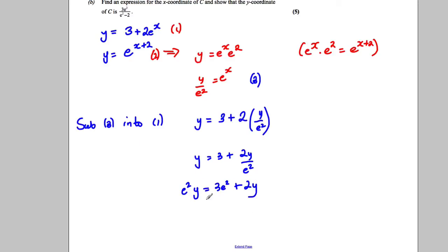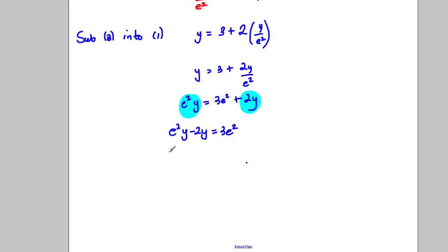And let's bring the y coordinates together. So I wanted everything with y on one side and everything not with y on the other. So subtract 2y from both sides. e^2·y subtract 2y is equal to 3e^2. And then factorize: y(e^2 - 2) is 3e^2.